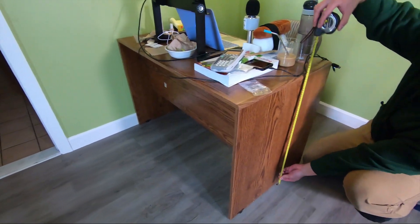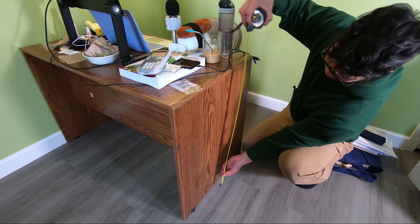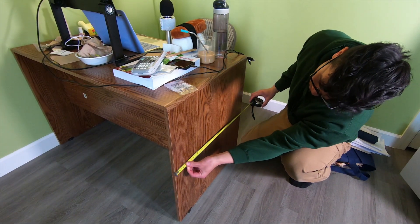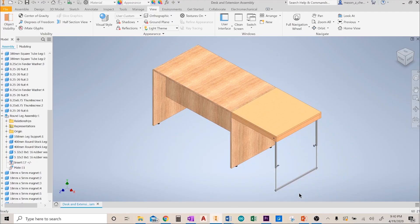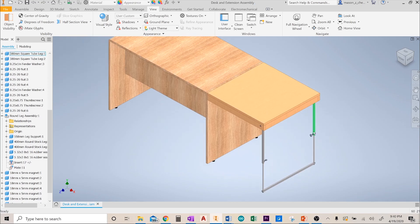The first step was to take some measurements of my personal desk, and after that I designed something. Now let me show you what I designed. All right, this is the solution I came up with. On the left side you can see a one-to-one scale model, the desk that you saw earlier, and on the right side you can see the desk extension itself.